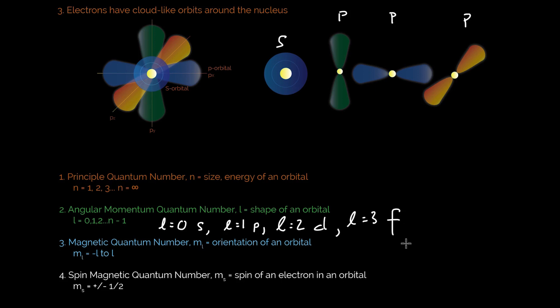And technically you can go l equals 4 is g, l equals 5 is h, all the way down the alphabet for as long as you want. But what I want you to notice here is let's go back to these p orbitals. Once you get to l equals 1, or l equals 2, l equals 3, etc., you can actually come up with different orientations.